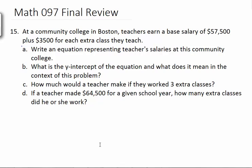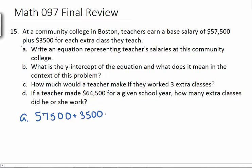For 15, at a community college in Boston, teachers earn a base salary of $57,500, plus $3,500 for each extra class they teach. So part A, write an equation representing the teacher's salaries at this community college. Well, we have a base salary of $57,500. And then there's an extra $3,500 for each extra class. So this is going to change depending on how many classes they teach. Part B, what is the y-intercept? What happens if x is 0? Well, that's just the base salary. They don't teach any extra classes. What does it mean? It means base salary. We teach the bare minimum of required classes with no extra.